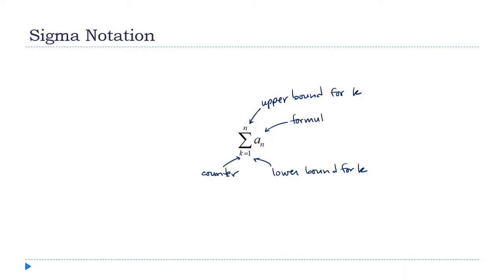This a_sub_n is going to be some kind of formula. All this is saying is: let k go from one to n — k is an integer, so one, two, three, four, up to n — substitute that number into the a_sub_n formula, and then add up all of the results. So this is a_sub_1 plus a_sub_2 plus a_sub_3, and so on all the way up to a_sub_n.